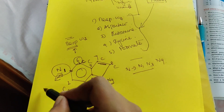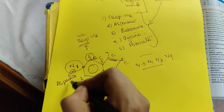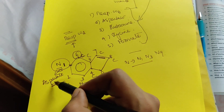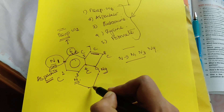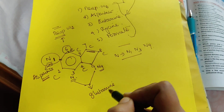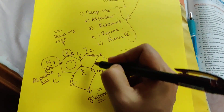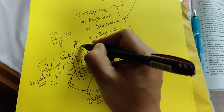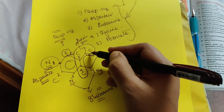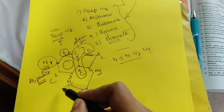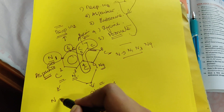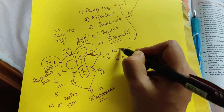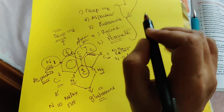In the purine ring, N1 is given by aspartate. C6 is given by respiratory carbon dioxide. N3 and N9 are given by glutamine. C4, C5, and C7 are given by glycine. The remaining carbons — C2 is given by N10-methyl tetrahydrofolate, and C8 is given by N5,N10-methylene tetrahydrofolate, both derived from formate.